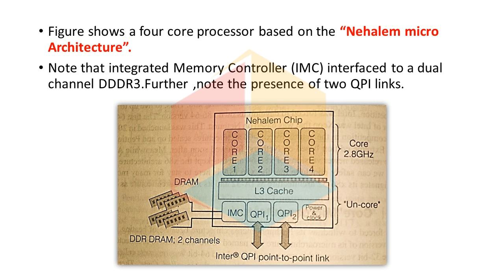The figure shows a 4-core processor based on the Nehalem micro-architecture. Note that the integrated memory controller interfaces with a dual-channel DDR3. Further, note the presence of 2 QPI links.